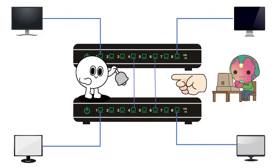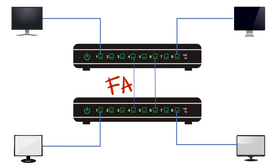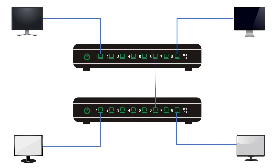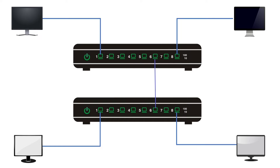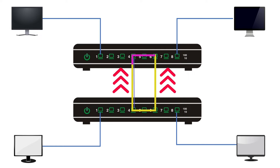For backup purposes, administrators create redundant links. A redundant link is a backup link of the primary link. If the primary link fails, the redundant link prevents the network from going down. The redundant or backup link is helpful only when the primary link fails. Until the primary link is functioning, the backup link should be disabled. If both links are enabled at the same time, it creates a switching loop.